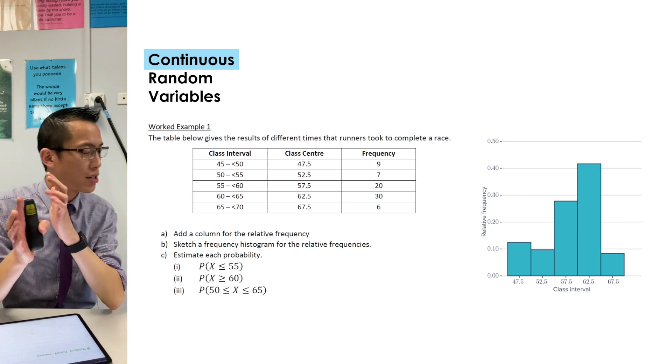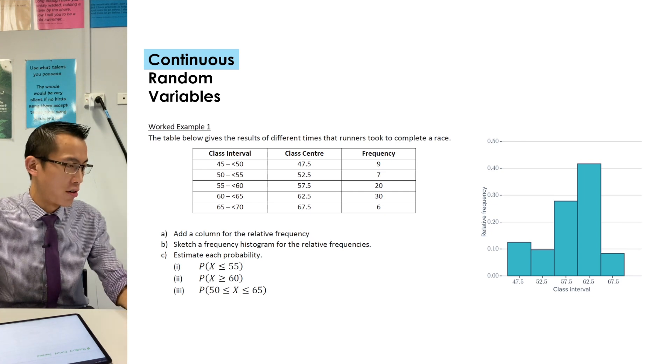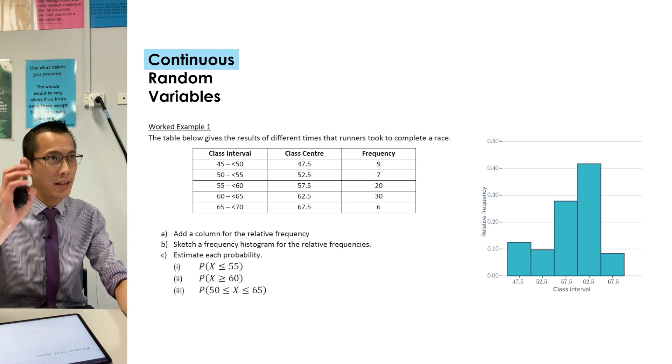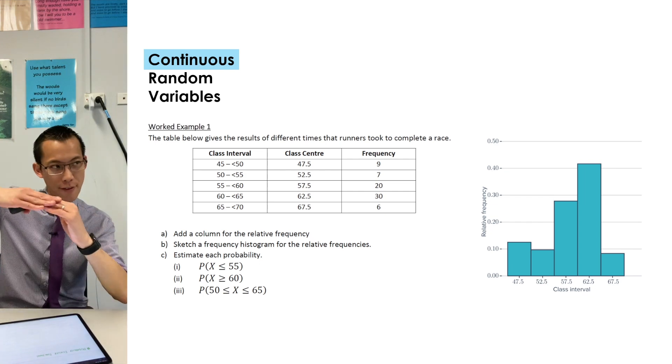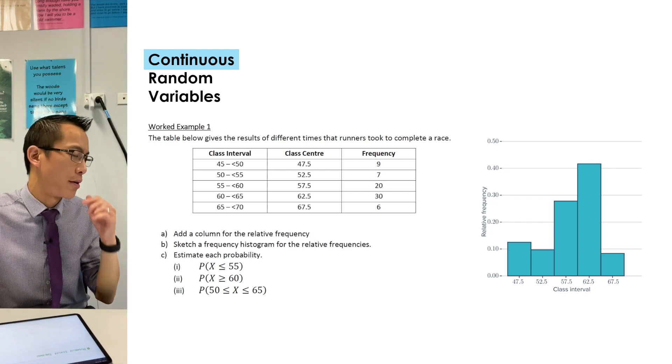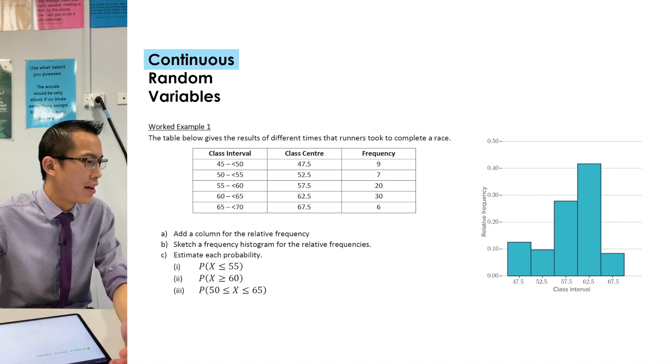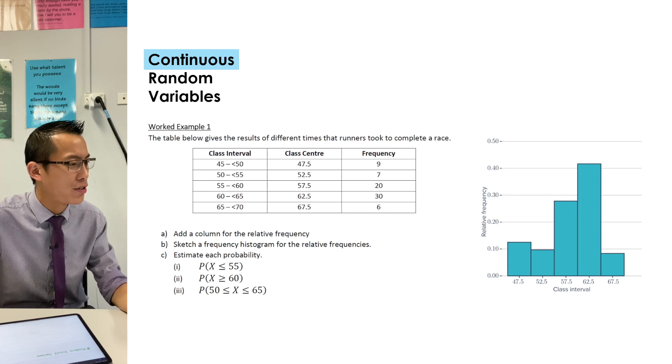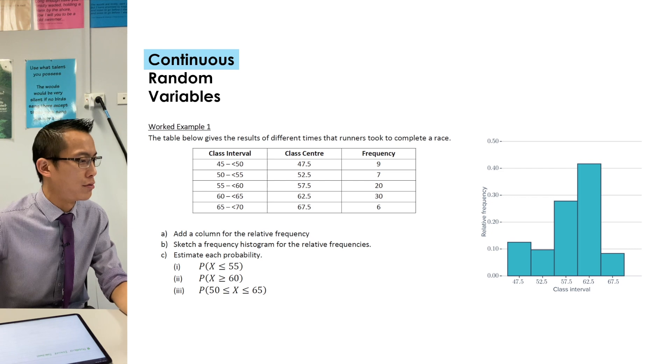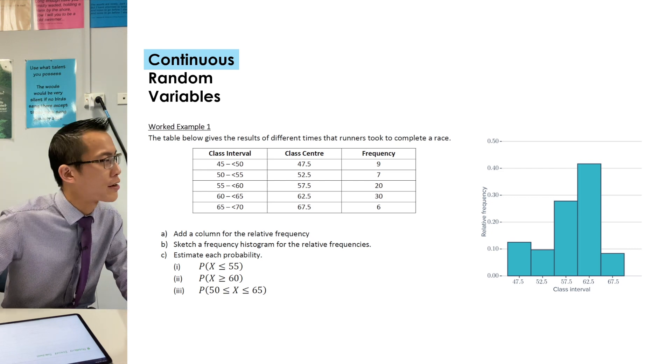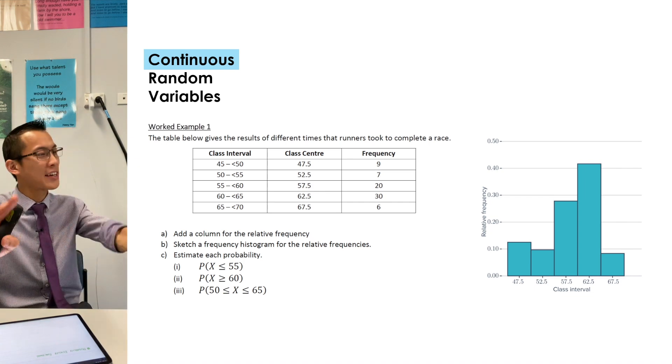You can see you've got each of the classes there, you could either have drawn in the class center, as you can see on this graph, or you could have marked in the beginning and ends of each class, so 45 and then 50, and you would have the bar going between those, so either of them would have been fine. And then you can see the heights there represent the relative frequency, so that's why the vertical axis, you can see they don't go up to like 20 and 30, it goes up to 0.4 whatever happens to be.